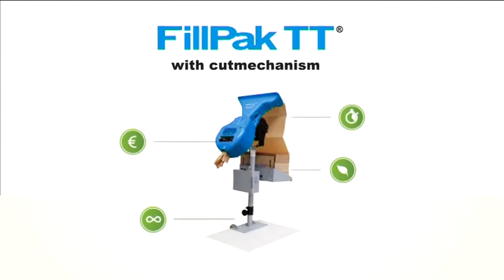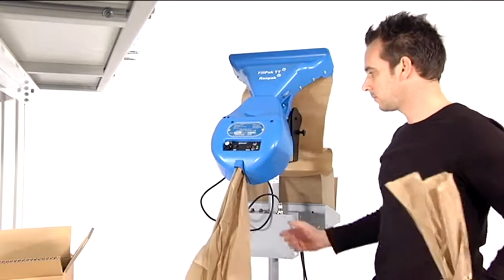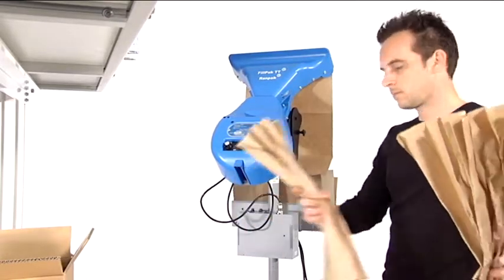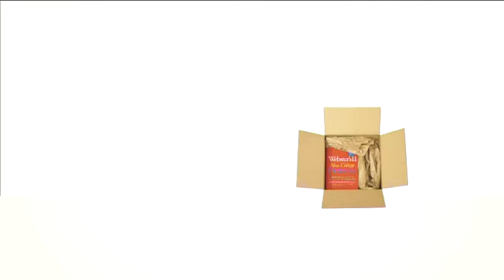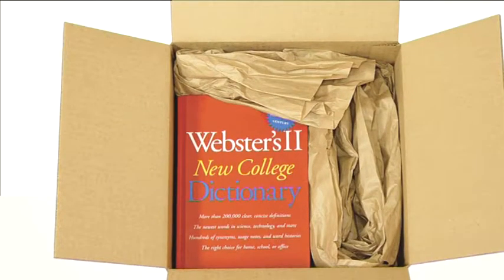The machine converts one layer of kraft paper into a high-volume, star-shaped paper configuration which can be used as a very effective filling material. It prevents products from shifting around in their box, ensuring damage-free arrival at the end destination.